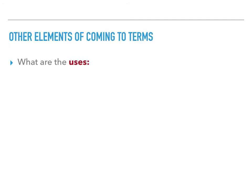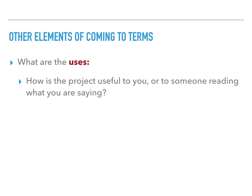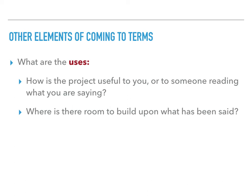The final two parts of coming to terms are assessing the uses and limits of the project you're coming to terms with. Uses are the most generous component — you ask what's good about this project, what's useful about the ideas, and how someone can build on the work that has already been done. It's important that you ask this question before you get to limits. It's very easy for most students to jump straight into criticism — we see flaws much more easily than we see what's good about something. But if we're faithful to the ethic that Harris lays out, we need to see the merits in a work before we start criticizing. This can also help with what's known as the backfire effect, which we'll get to later in the semester.